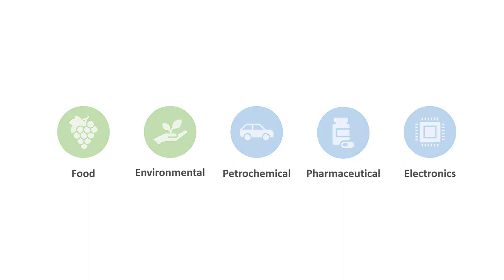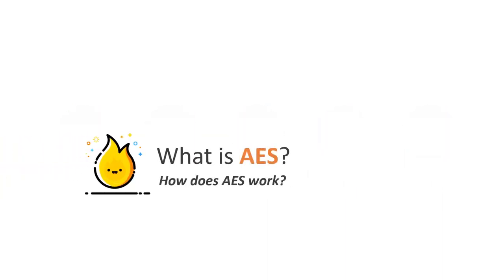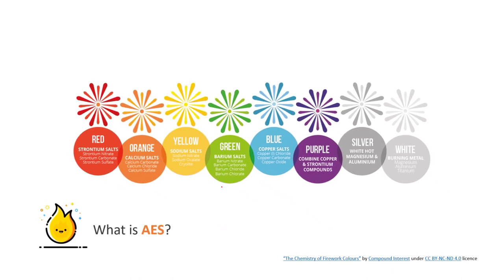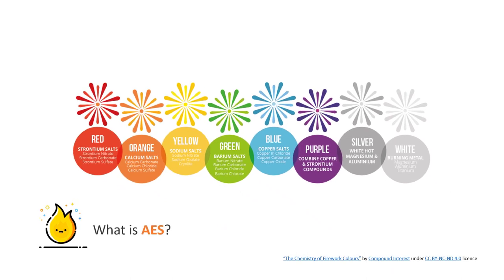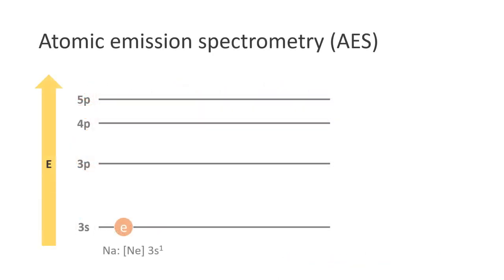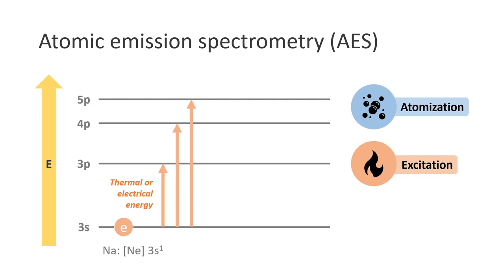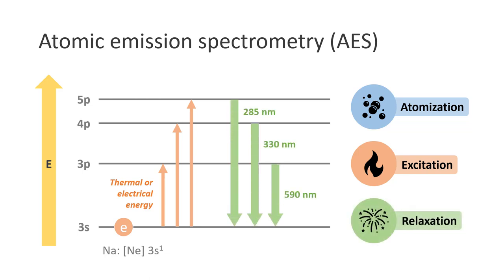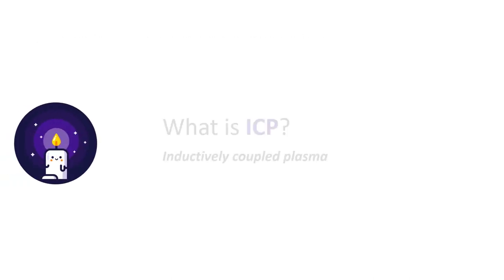Secondly, we have learned what AES is and the working principles behind AES, where we discussed the different colors we see in fireworks is actually due to the atomic emission of different metal salts present. The three major steps in AES involve the atomization and the excitation, which can be achieved with the use of a flame or ICP, followed by a relaxation back to the ground state, giving up the energy as atomic emissions.